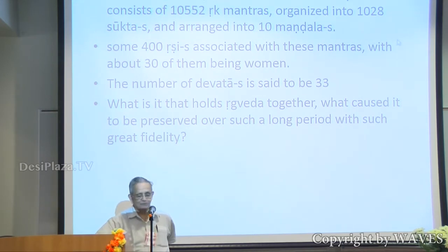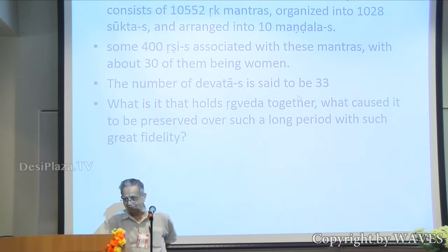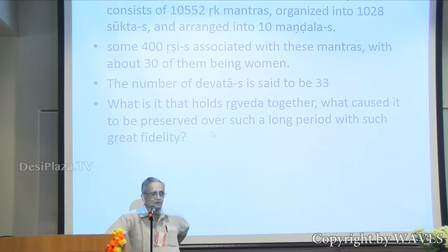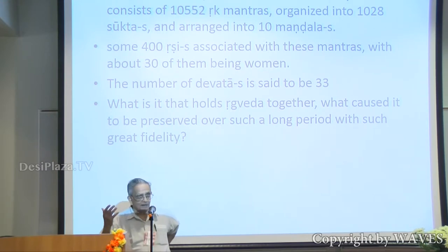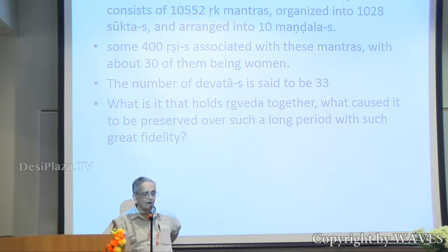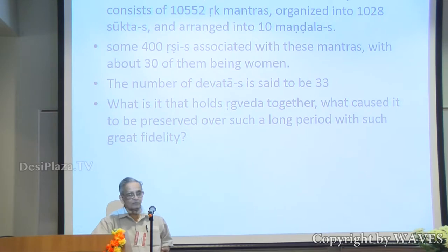There are 400 rishis associated with these mantras, and about 30 of them are women. The total number of devatas is nominally 33. The rishis lived for thousands of years, and they are not one devata, nor in one chandas. So the question is: what is it that holds the Rigveda together? What caused it to be preserved for such a long period with such great fidelity?